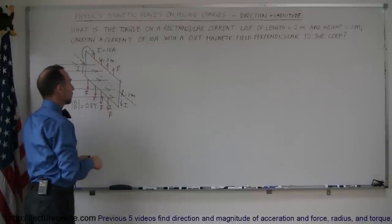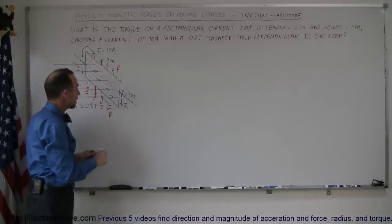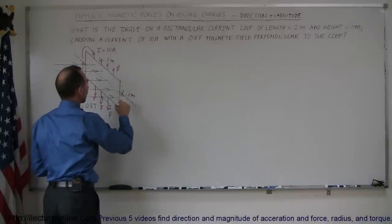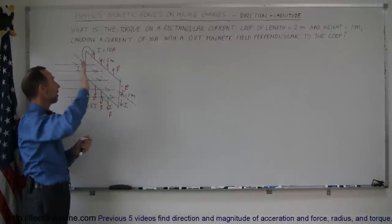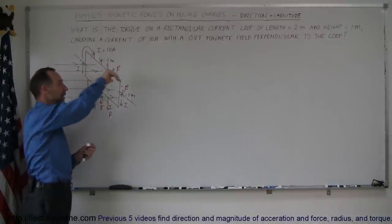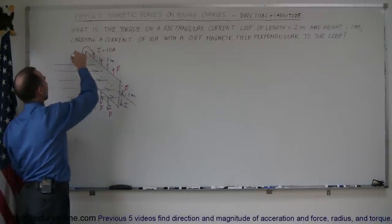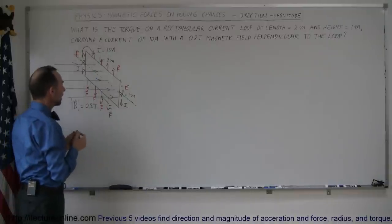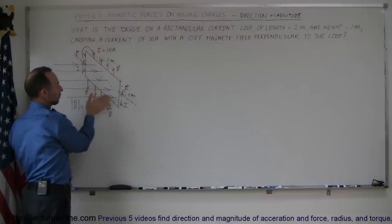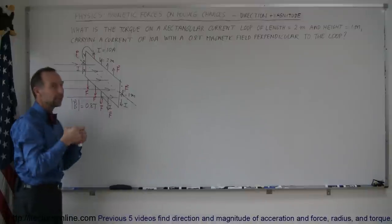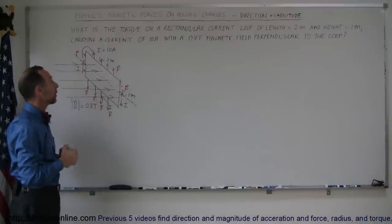On the front side, we have the current going straight down and the B field in this direction, which means the force will be out of the board — I'll draw little dots indicating the force is out of the board. On the back of the loop, if the current is up and the B field is this way, the force is into the board — I draw little crosses. So on all sides: top force is upward, bottom force is downward, front force is out of the board, back force is into the board. The loop gets pulled in opposing directions and is not going to go anywhere.